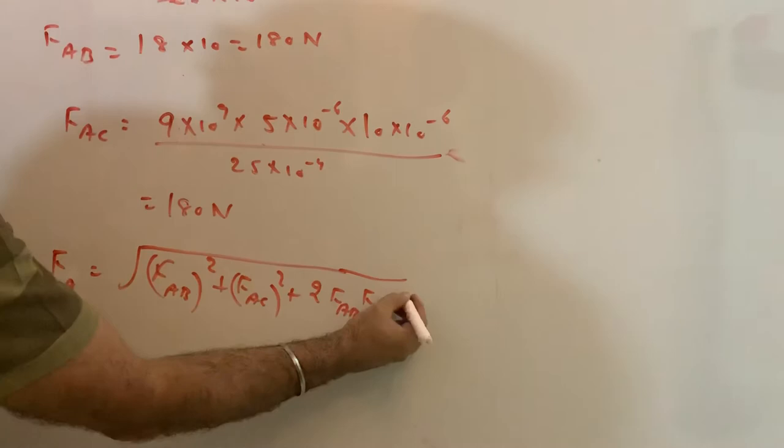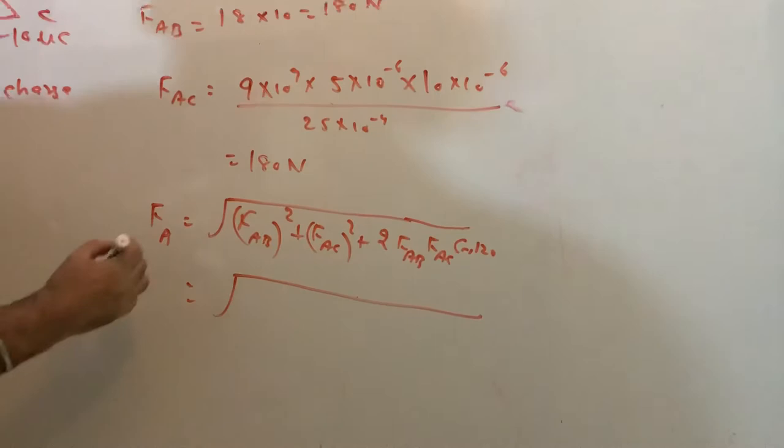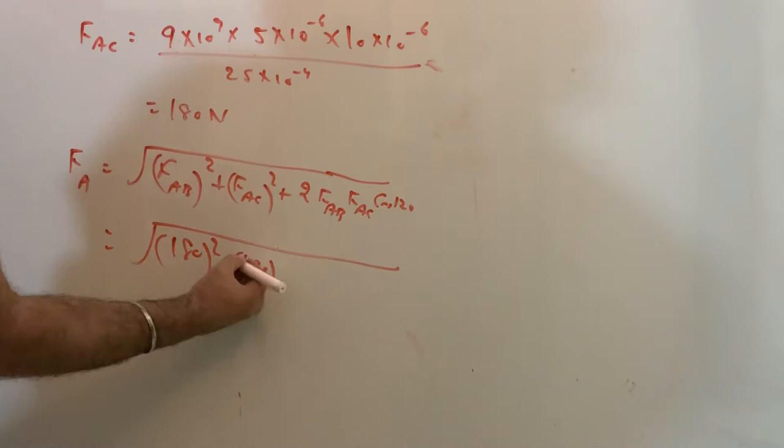Plus 2·F_AB·F_AC·cos(120°). Cos(120°), please remember the value is -1/2. So F_AB is 180 squared.